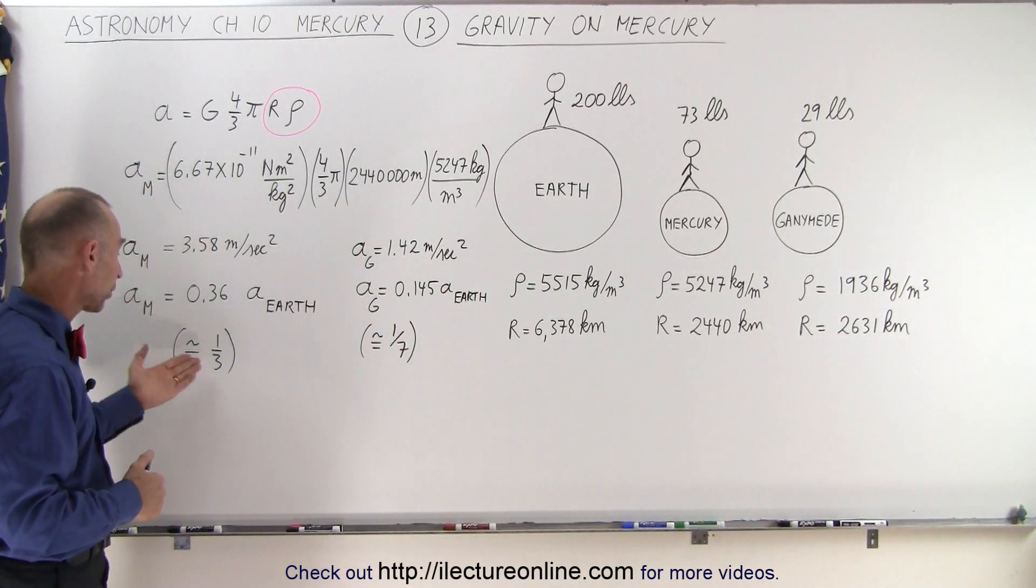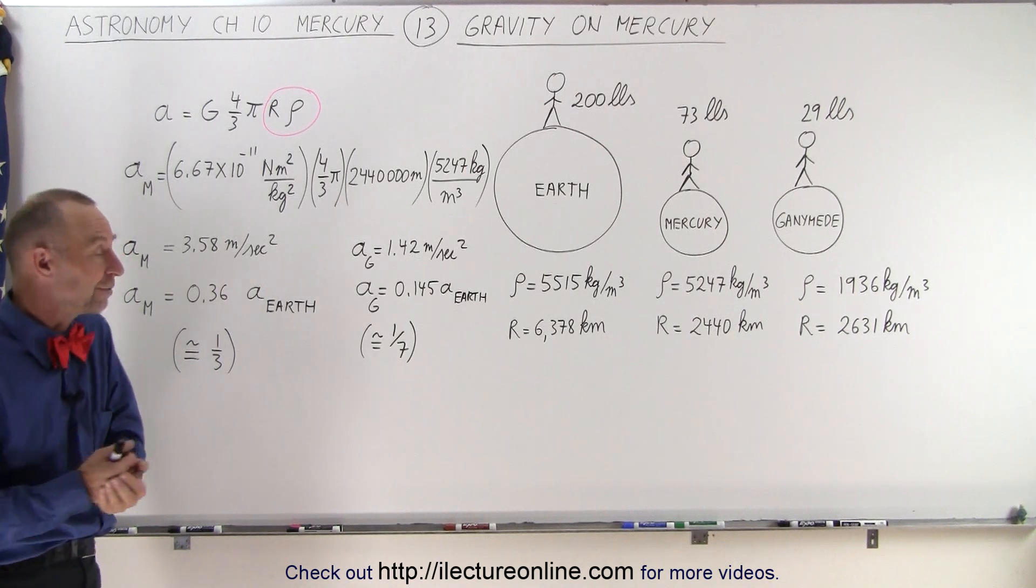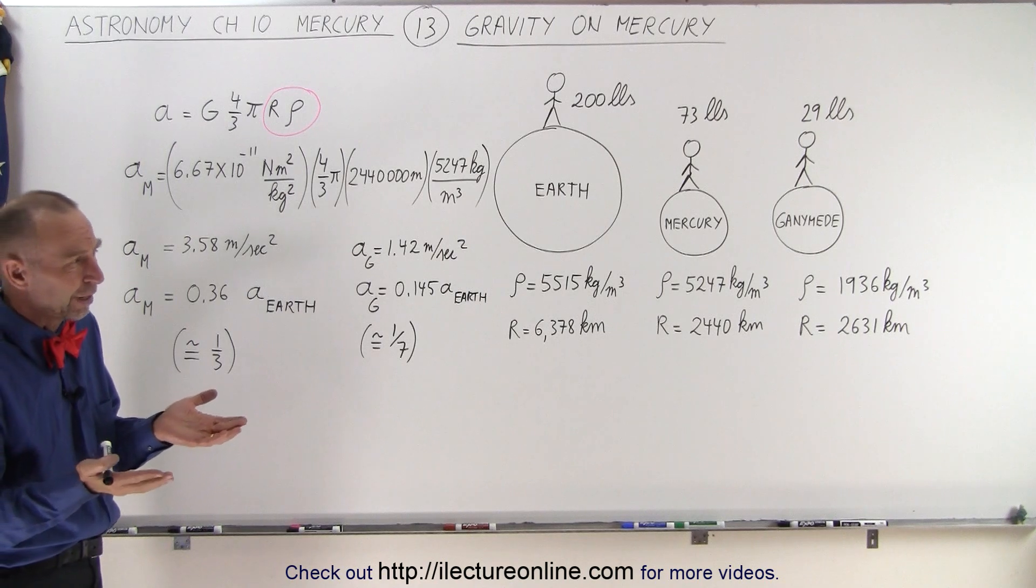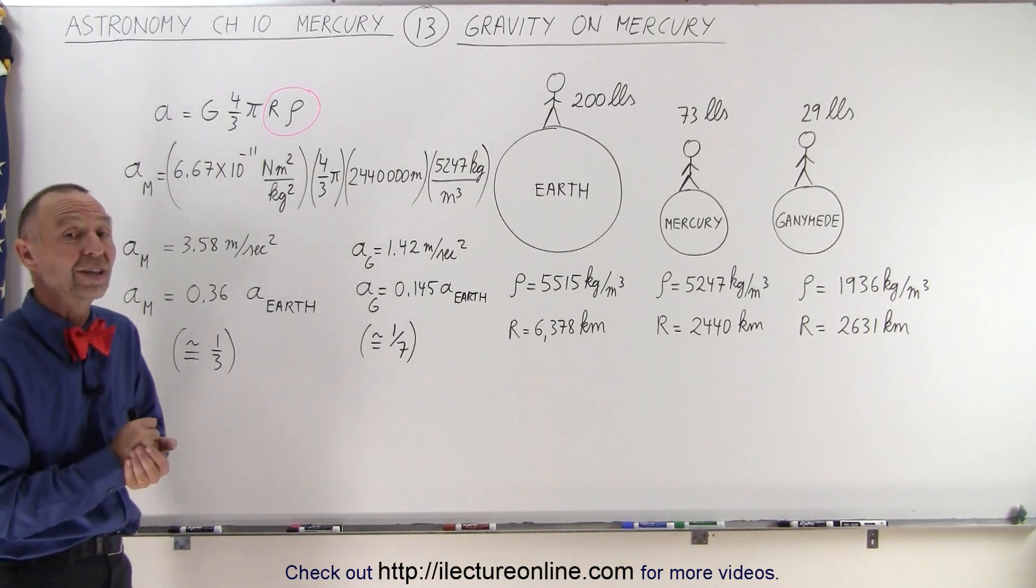So the gravitational force of Mercury is roughly one-third the gravitational force on the Earth. And for Ganymede, it's only one-seventh. And for comparison, for the Moon, it's about one-sixth.